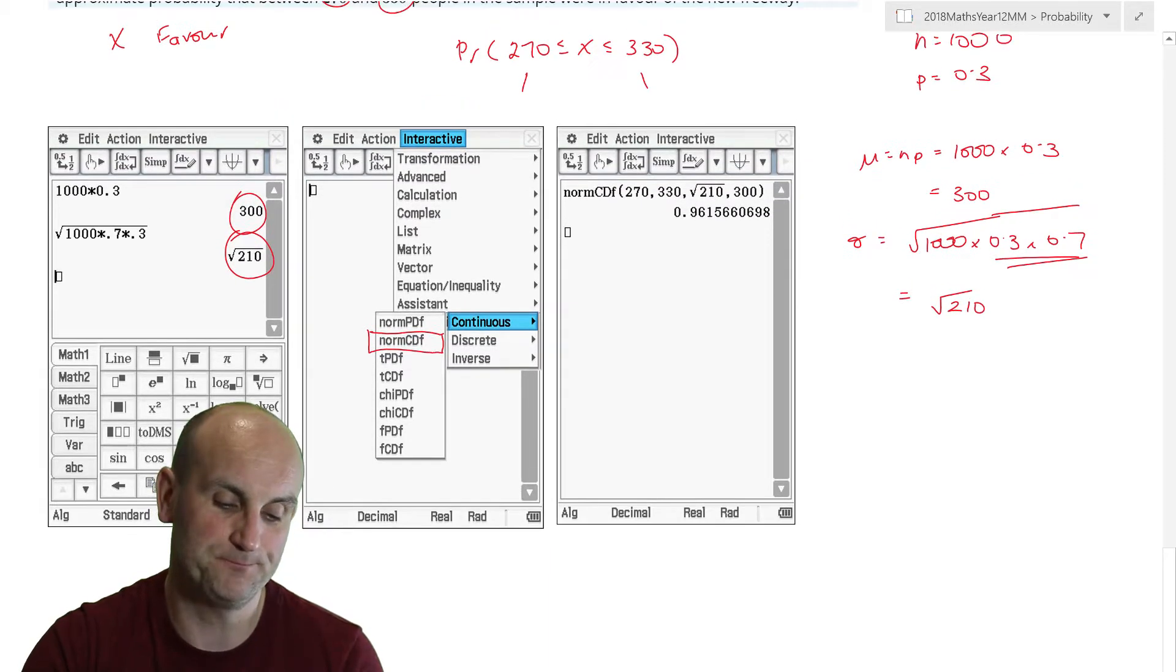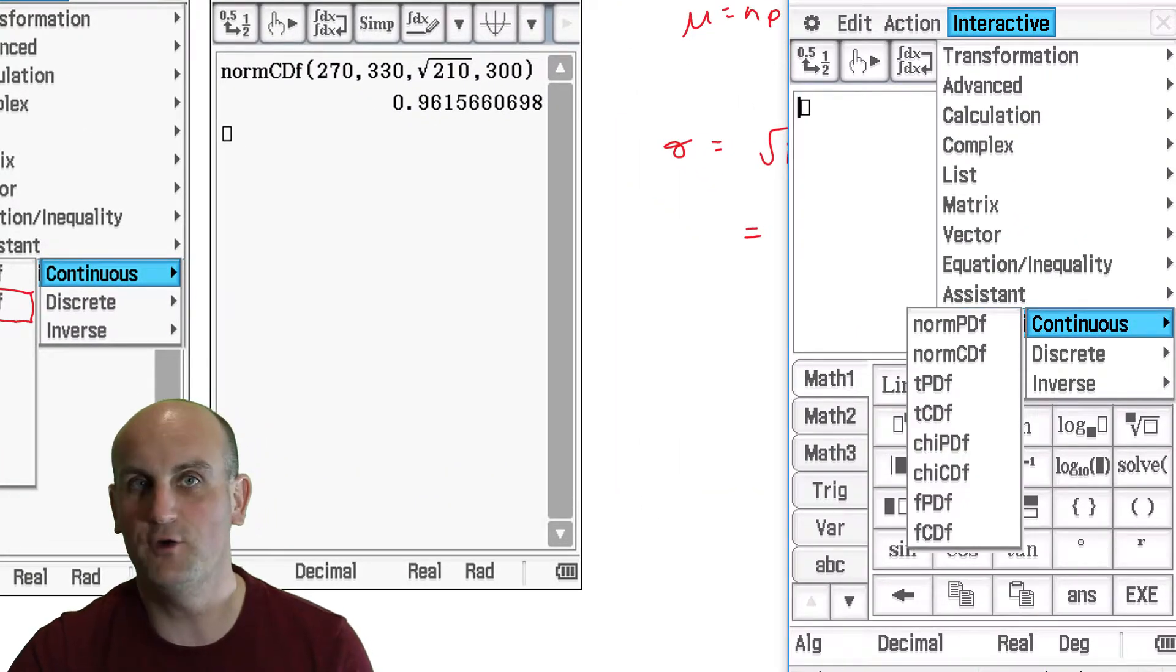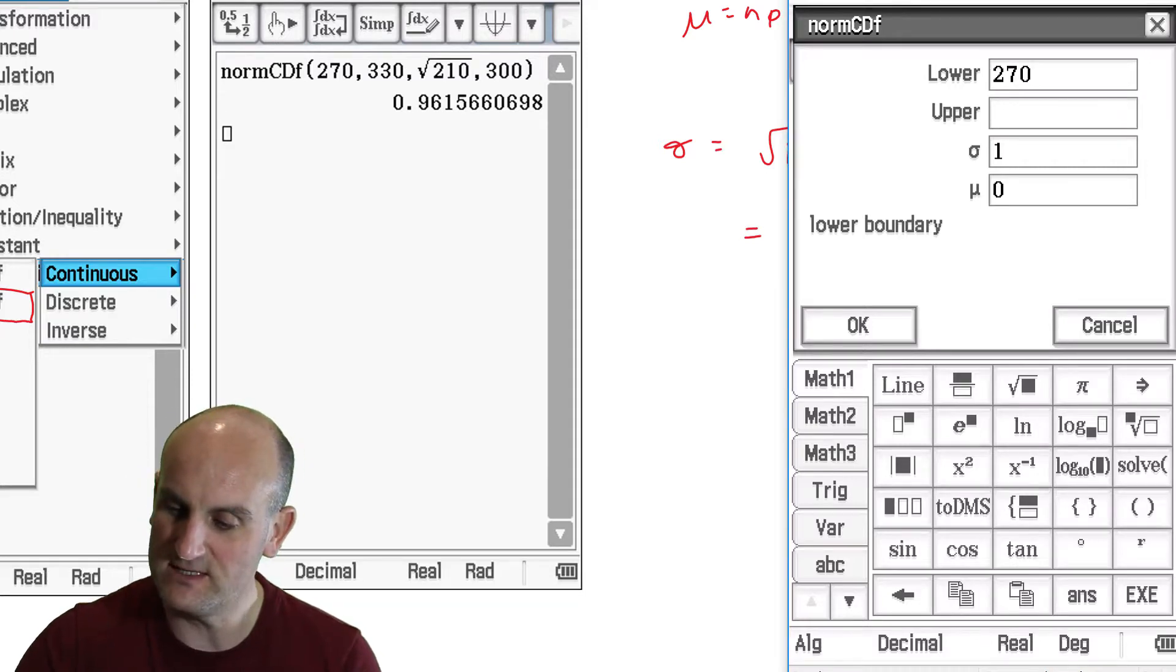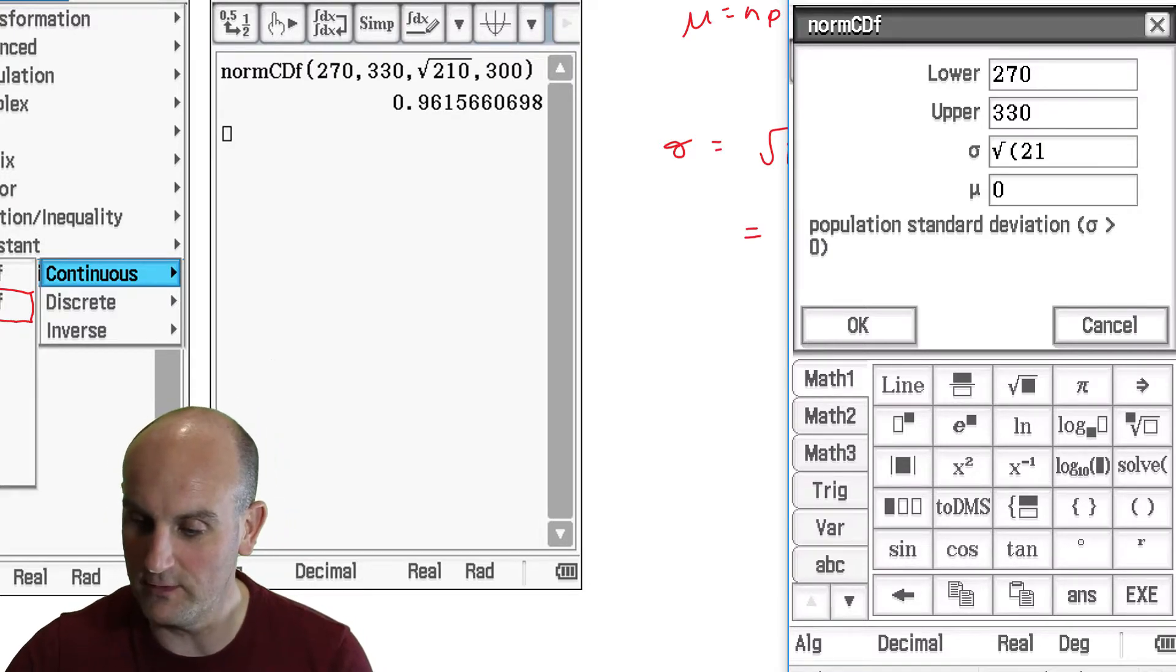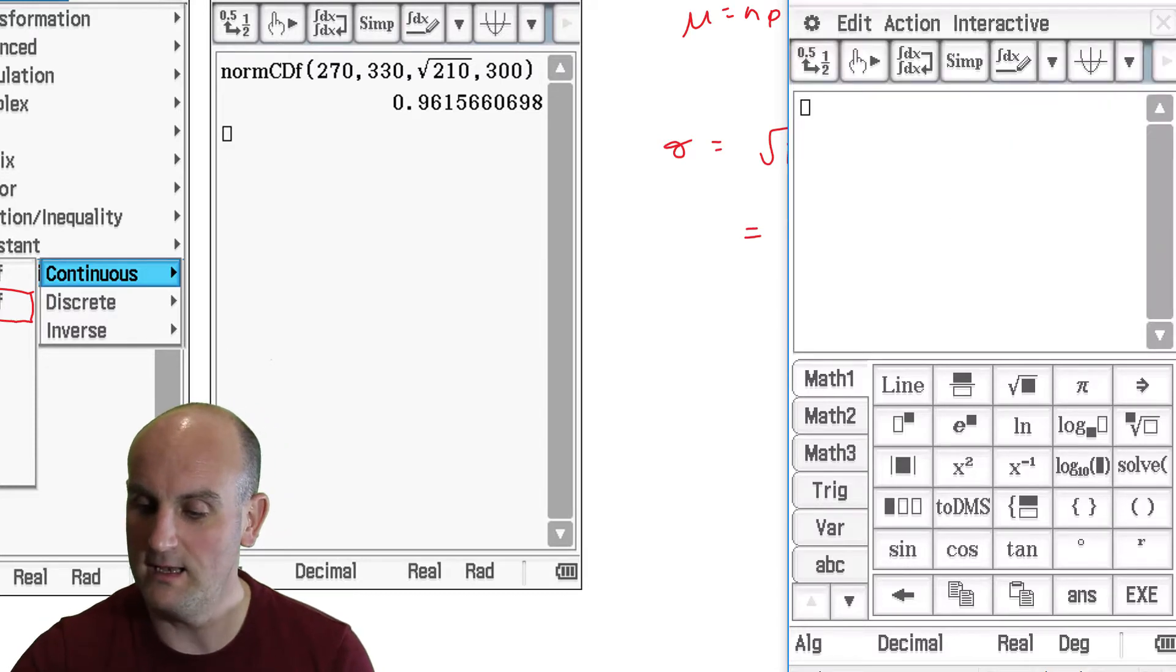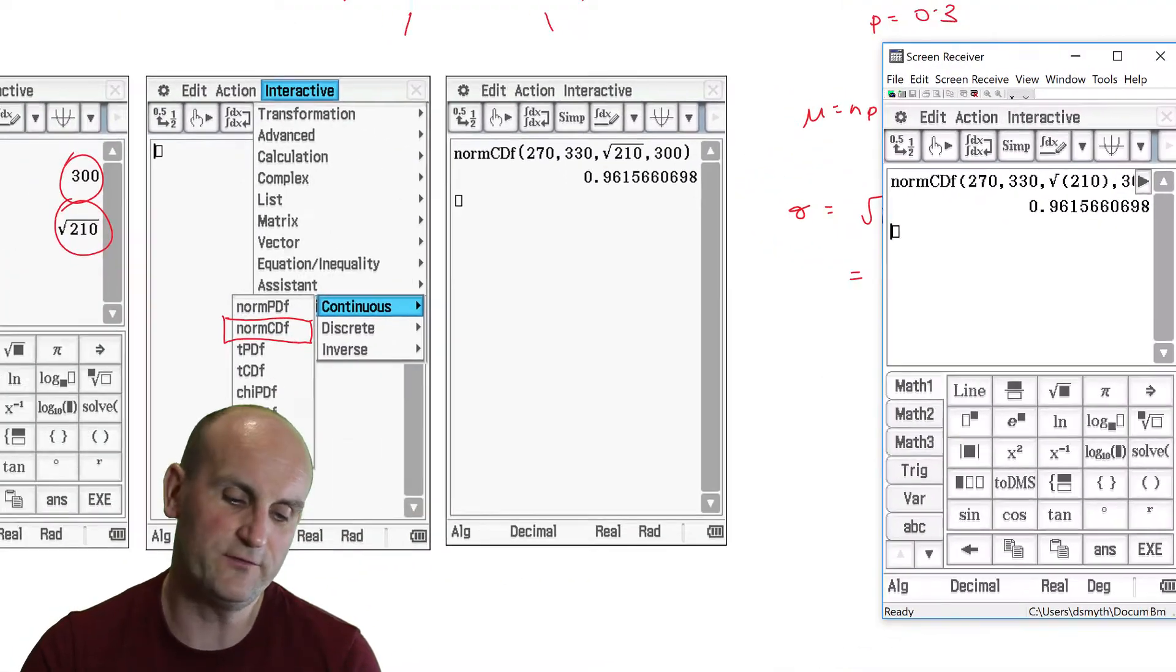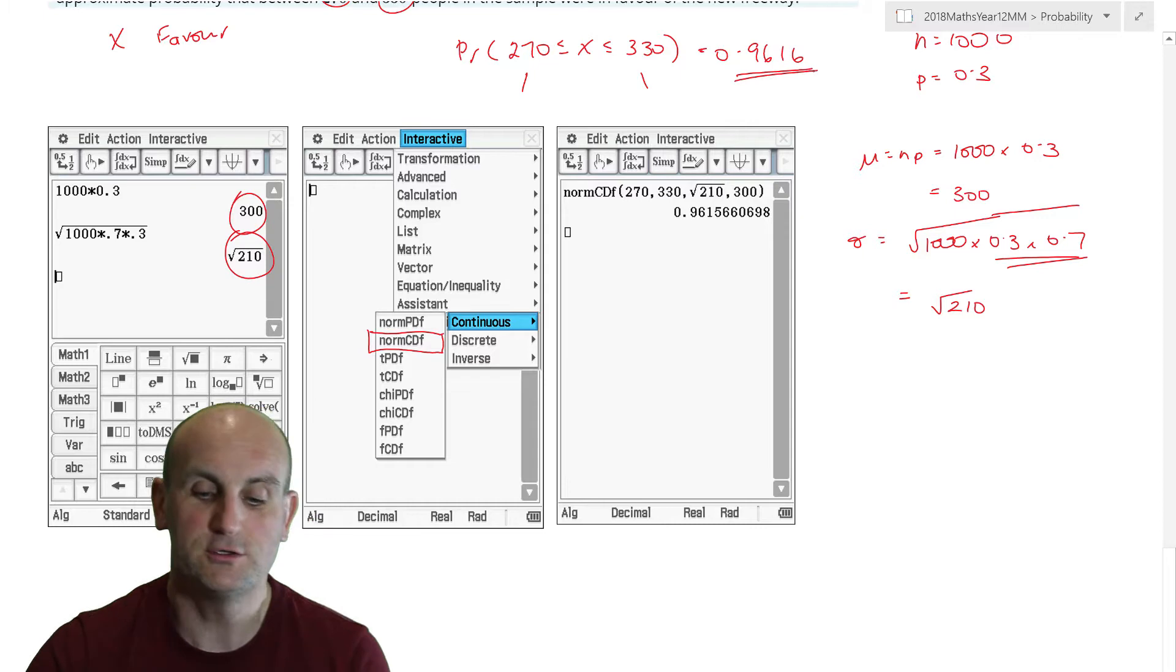Then using that information, I have, as we have done before, loaded up my CAS calculator, got an interactive distribution continuous. Now, it's not an inverse. They're not giving me a probability. They're not giving me a percentage. They're asking me for a probability. So I don't use the inverse norm. I use the norm and again CDF because I want a range of probabilities. My lower is 270. My upper is 330. My sigma, remember, yes, is the square root of 210. And the great thing about the Casio class, but you can put square roots in. And my mean worked out to be 300. Enter. Incorrect number of arguments. That is because I've missed off a bracket there. That was remiss. Gives me a probability of 0.9616 to four decimal places.